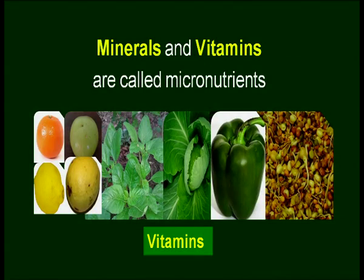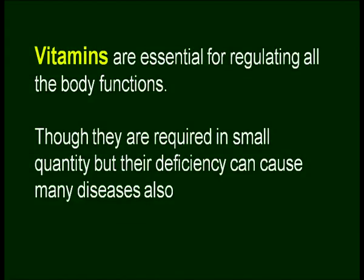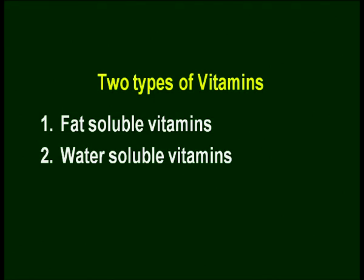Minerals and vitamins are called micronutrients. You can see various kinds of foods here — very tempting, not only in taste but color-wise also. They are all rich sources of vitamins. They are essential for regulating all body functions. Though they are required in small quantities — micrograms, milligrams — their deficiency can cause many diseases. We categorize vitamins into two categories: fat-soluble vitamins and water-soluble vitamins.